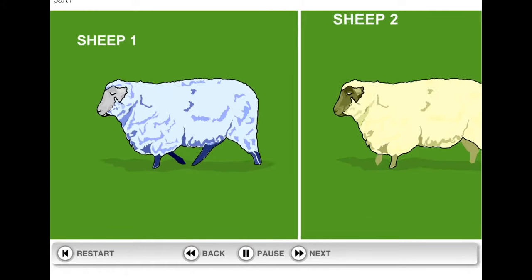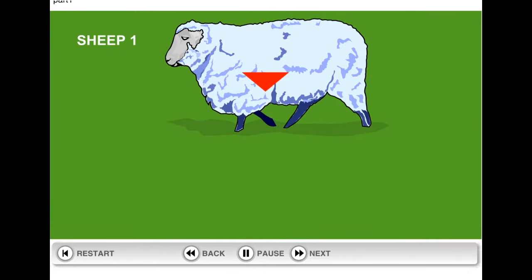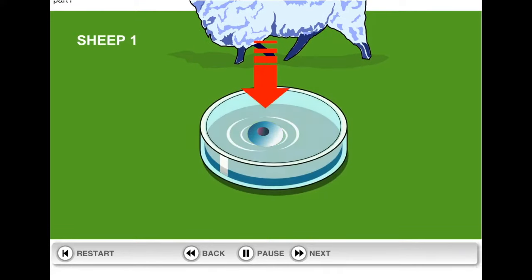The first step involved taking cells from the udder of Sheep 1, and culturing them in a gel to create a batch of identical cells.